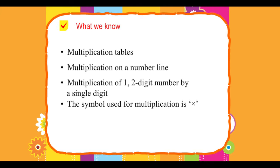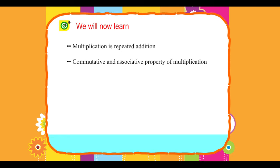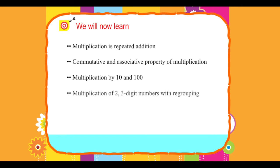The symbol used for multiplication is ×. We will now learn: multiplication is repeated addition, commutative and associative property of multiplication, multiplication by 10 and 100, and multiplication of 2 and 3-digit numbers with regrouping.